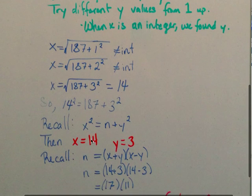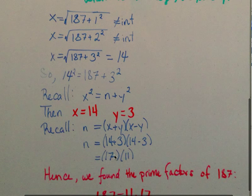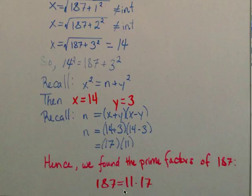Now, recalling that n can be factored as x plus y times x minus y, we plug in those numbers: 14 plus 3 times 14 minus 3, and we obtain n equals 17 times 11. Hence we have found the prime factors of 187: 187 equals 11 times 17.